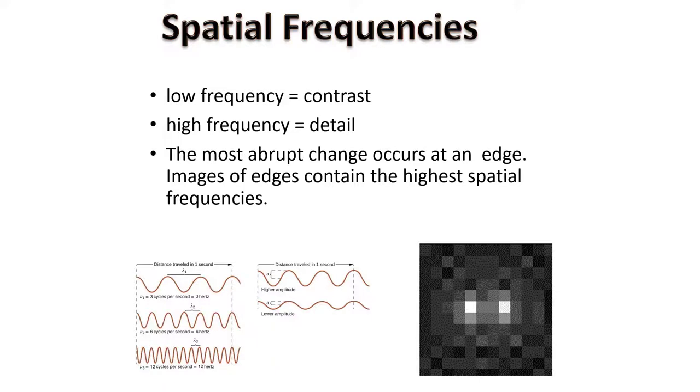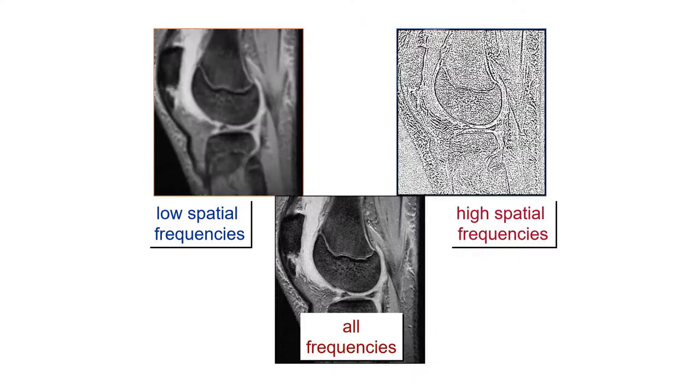The spatial frequencies or intensities that are mapped to the matrix provide us with contrast and detail. Low spatial frequencies give us contrast, high spatial frequencies give us detail. We combine those to get the image.